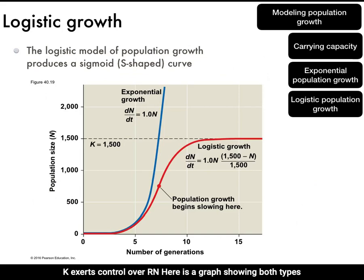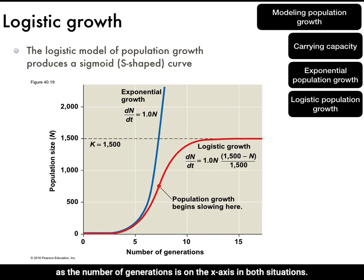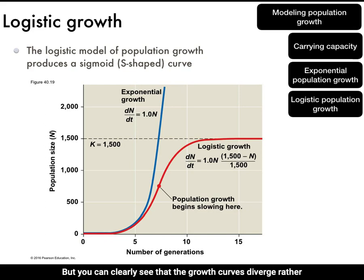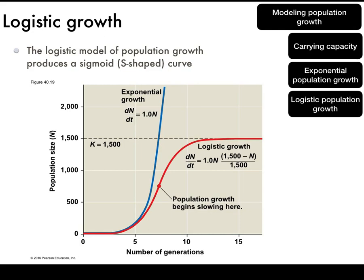Here is a graph showing both types of population growth models side by side. Population size N is on the y-axis and time expressed as number of generations is on the x-axis. In both situations, the intrinsic rate of increase r is 1.0, but the growth curves diverge quickly from identical starting points. This is because as the red logistic curve approaches the carrying capacity of 1,500 individuals, the population growth begins to slow down.